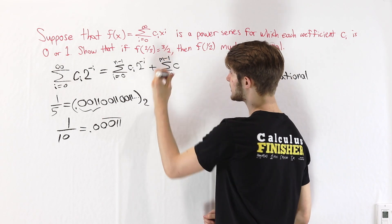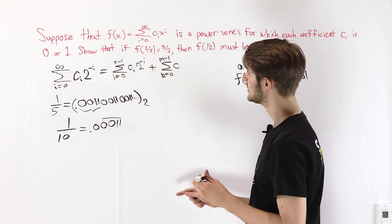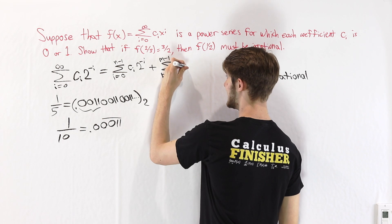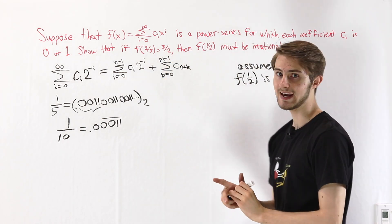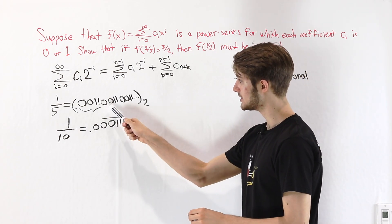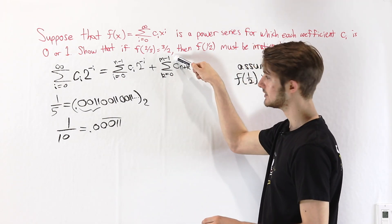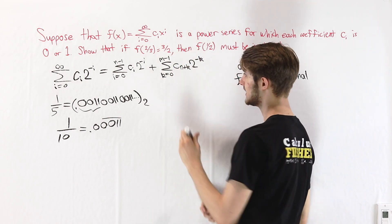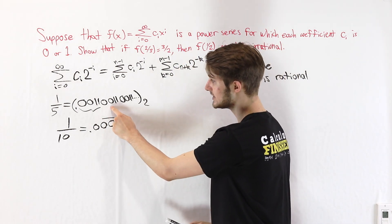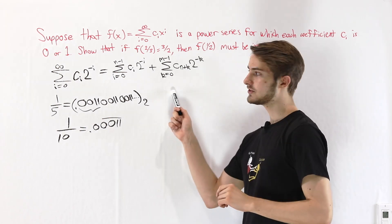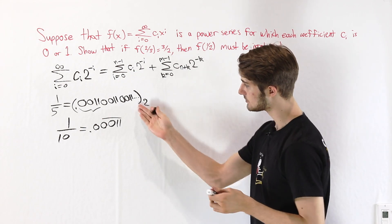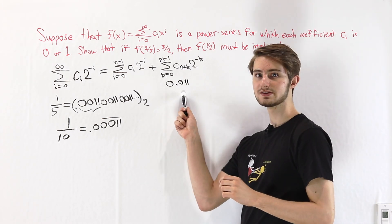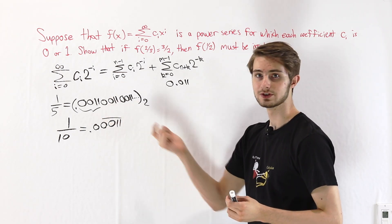But this only tells us the sequence of digits we're looking at — for example, 0011. It doesn't tell us what an infinite sequence of those looks like. When we have an infinite sequence of digits in an expansion, we can think of it as a sum: 0.0011 plus 0.000011 plus and so on. That's going to look like the sum from i equals 0 to infinity.